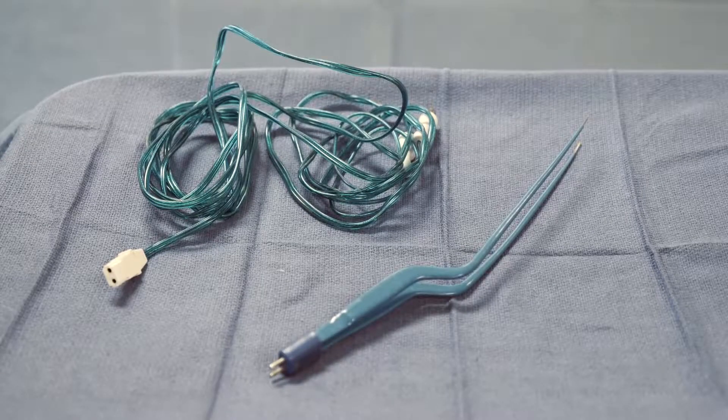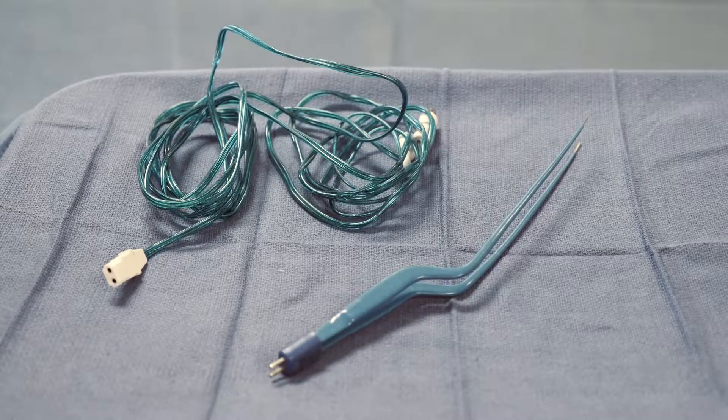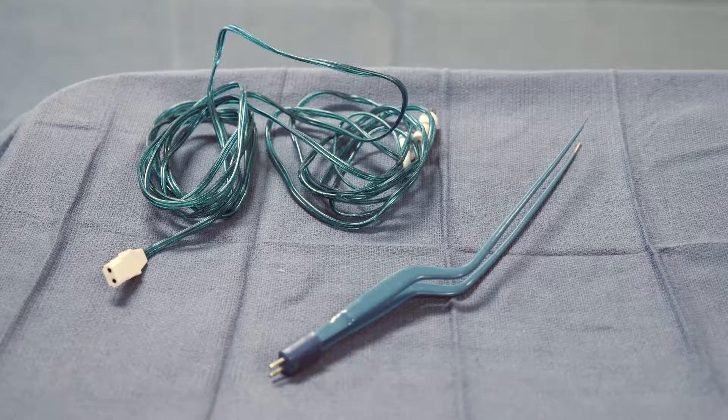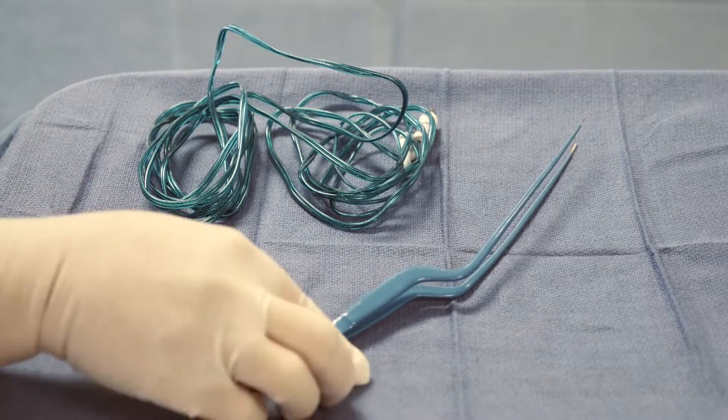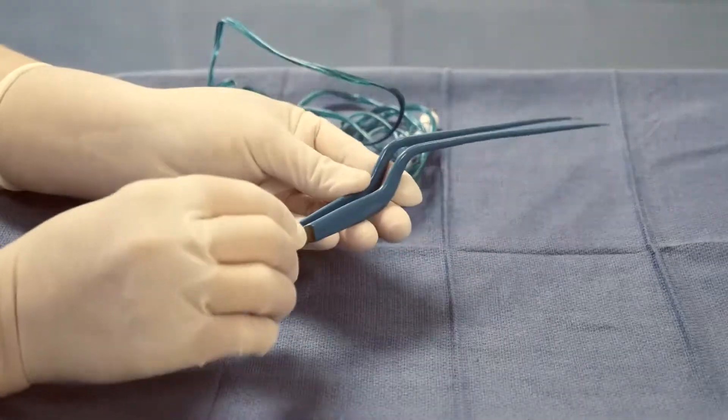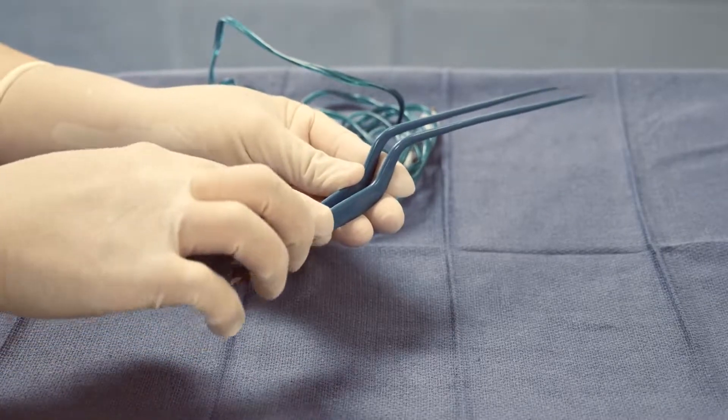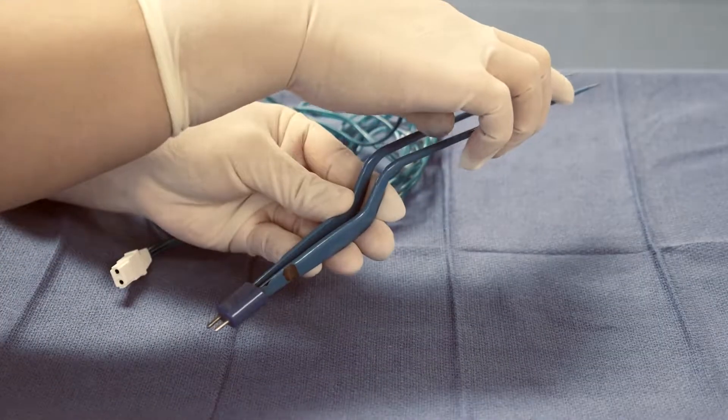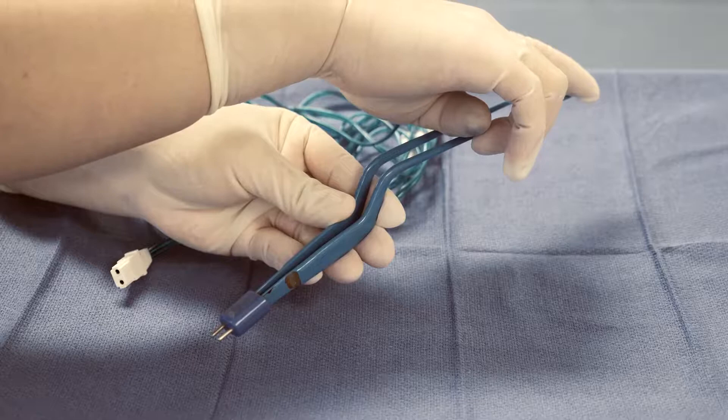This instrument here is called a bayonet or a bipolar forceps. Notice here how the forceps along the shaft is insulated. The insulation stops at the tip of the instrument.